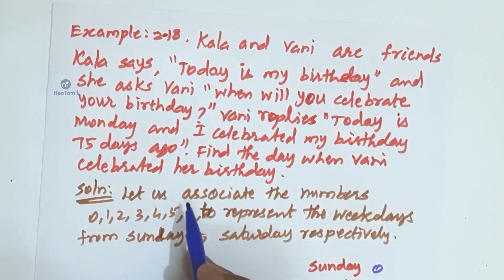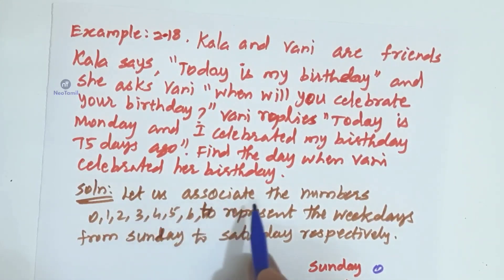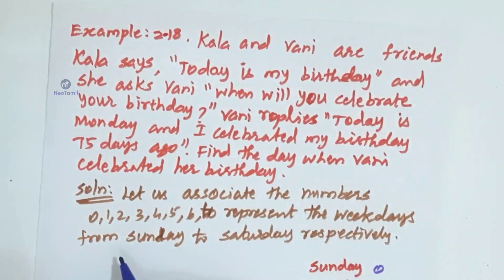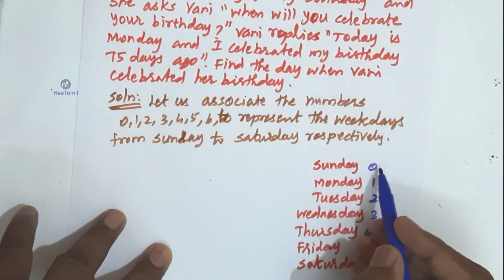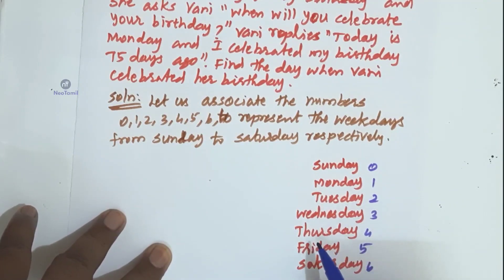So, let us associate the numbers 0, 1, 2, 3, 4, 5, 6 to represent the weekdays from Sunday to Saturday. Sunday to Saturday, we represent the numbers 0 to 6: Sunday is 0, Monday is 1, Tuesday is 2, Wednesday is 3, Thursday is 4, Friday is 5, Saturday is 6.